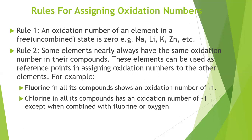Rule two: some elements nearly always have the same oxidation number in their compounds. These elements can be used as reference points in assigning oxidation numbers to other elements. For example, fluorine in all its compounds shows an oxidation number of minus one. This oxidation number is essentially constant throughout their compounds.